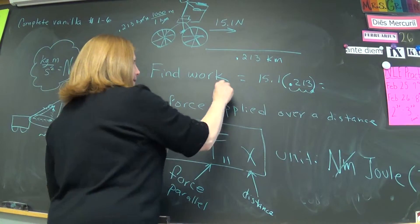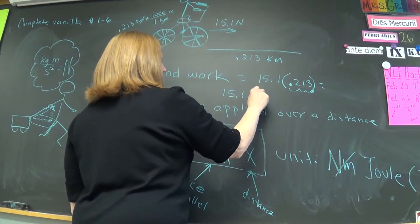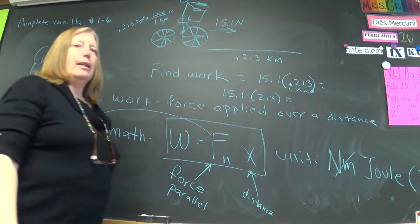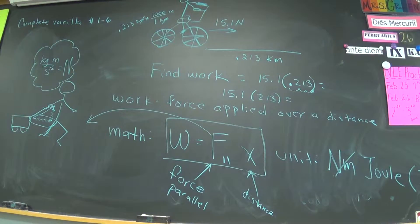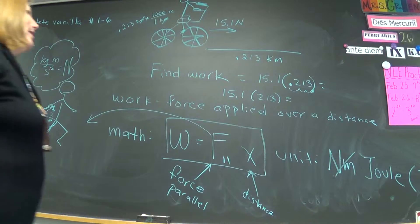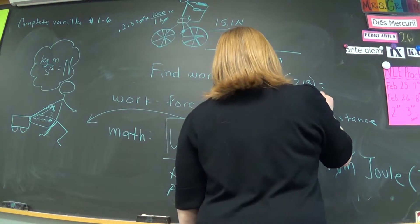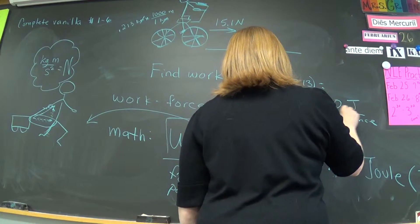Thank you, Brendan. Fifteen point one times two one three. All right, a number, three significant digits. Molly, please. Three thousand two hundred and two. Three thousand two hundred and twenty. All right. Three thousand two hundred and twenty, and that is joules.